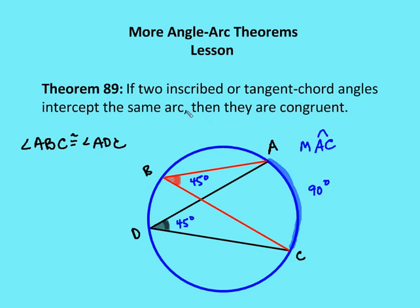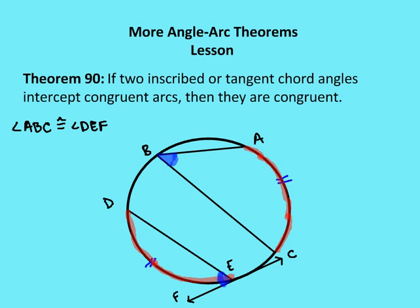If two inscribed or tangent chord angles intercept the same arc, then they are congruent. Moving on: if two inscribed or tangent chord angles intercept congruent arcs, then they are congruent. So if the measure of arc AC is 110 degrees and arc DE is also 110 degrees, then angle ABC equals 55 degrees and angle EDF also equals 55 degrees. So angle ABC is congruent to angle DEF.